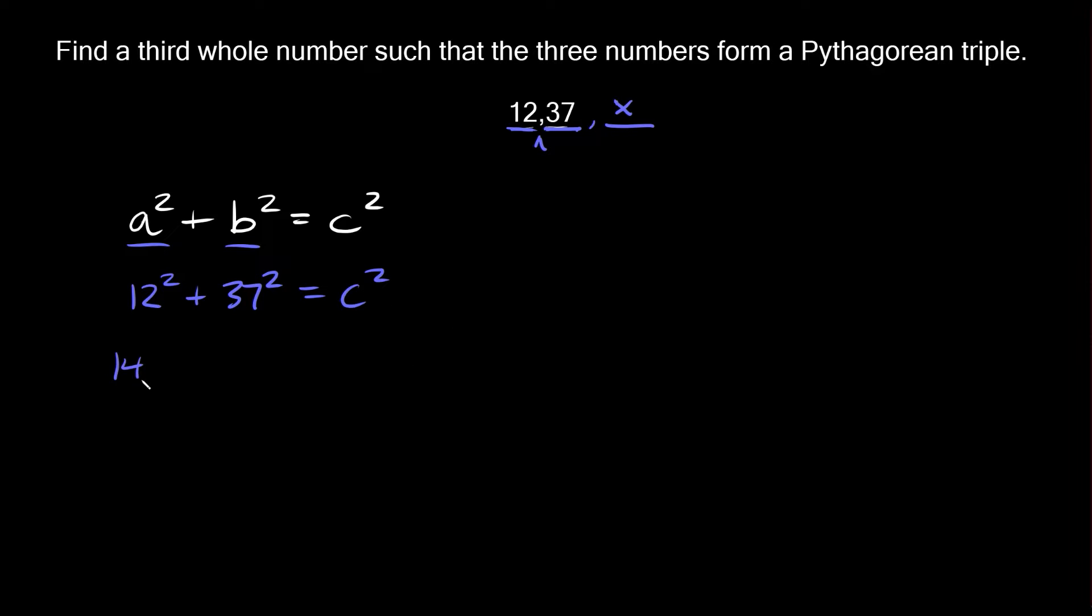12² is 144, 37² is 1369 and that's equal to c². Now 144 + 1369 = 1513 and that's equal to c².